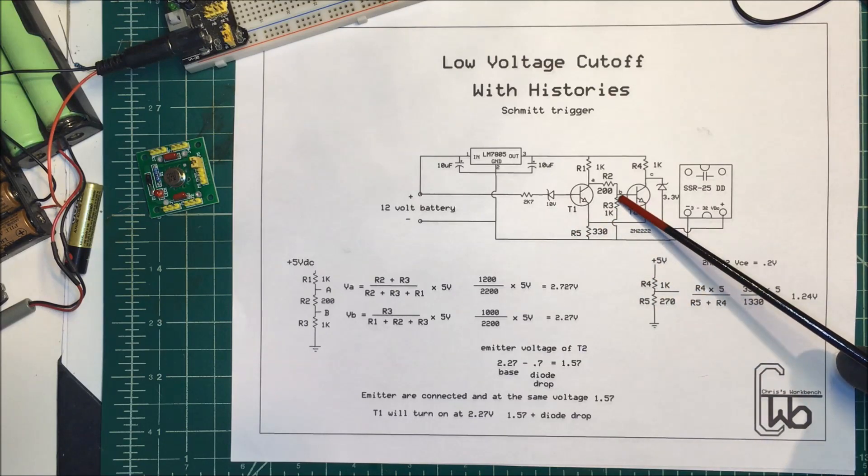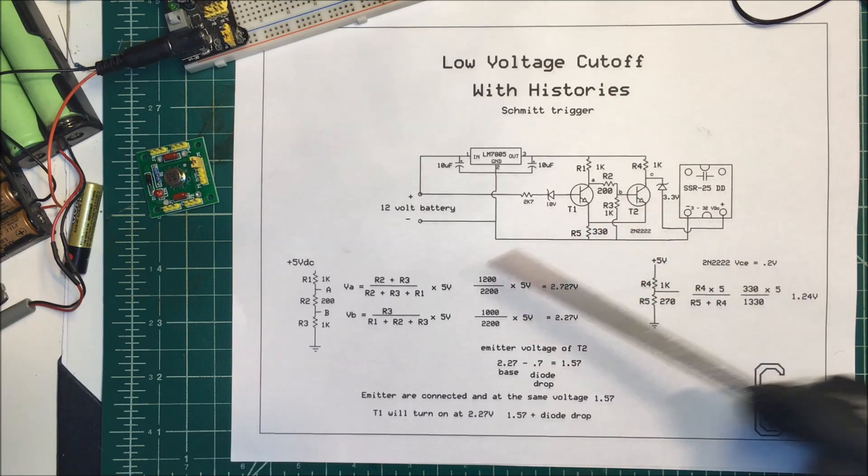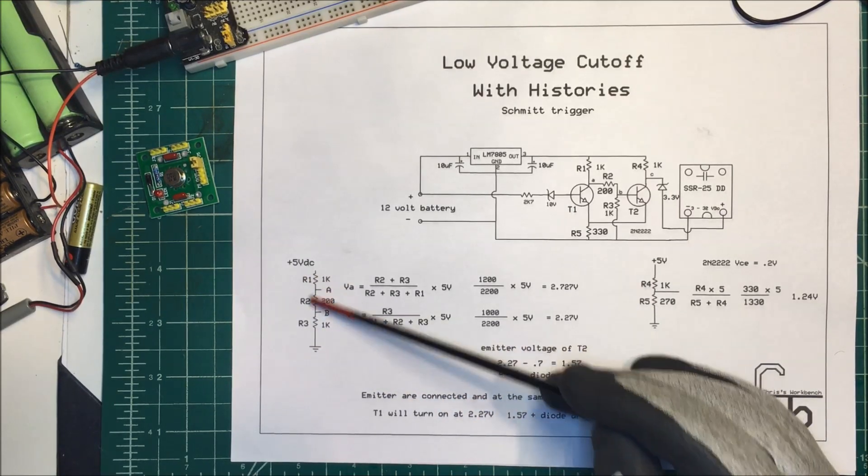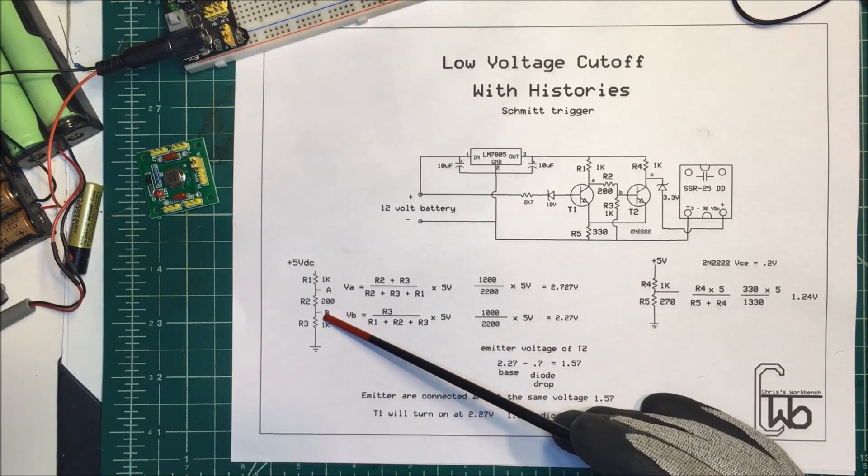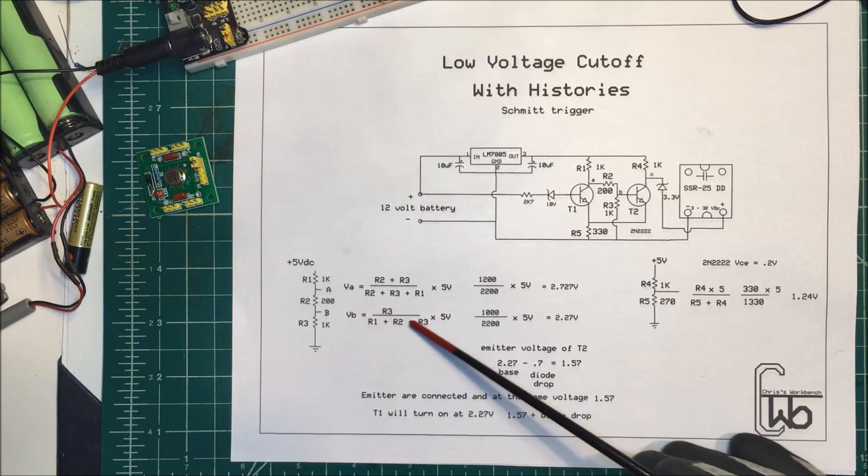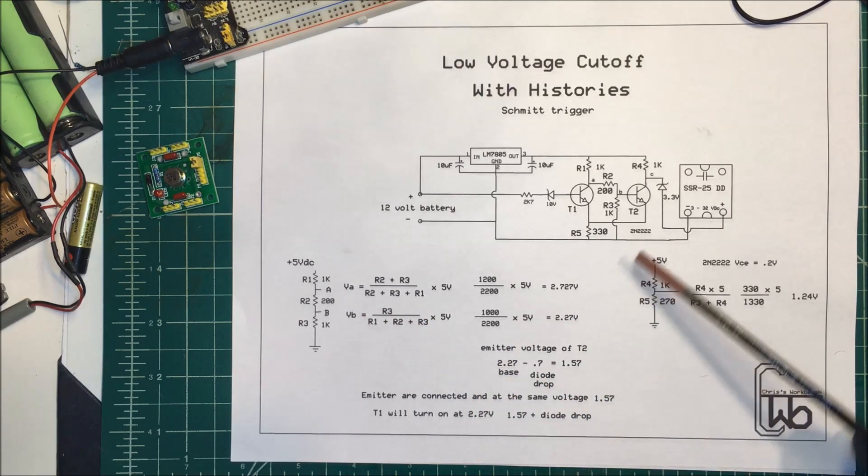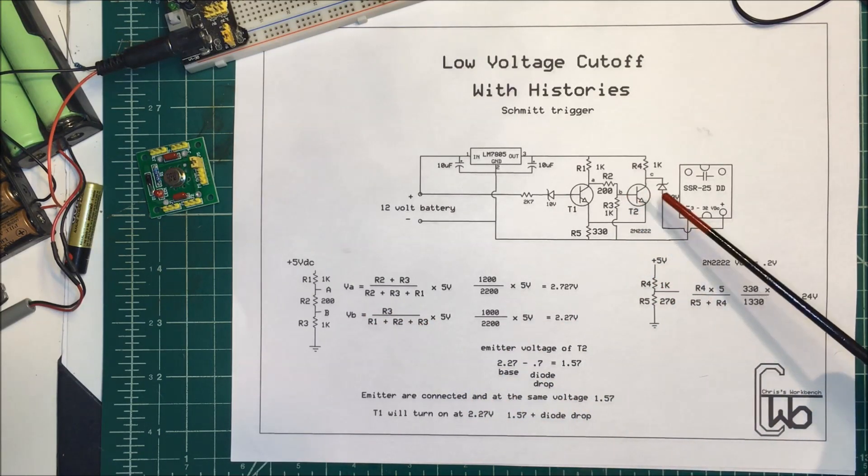So to find the voltage at the base of T2 here you just use a voltage divider. We're trying to find the voltage at this point and if you use this formula here it comes out to 2.27 volts at the base here. That's enough to turn this transistor on.